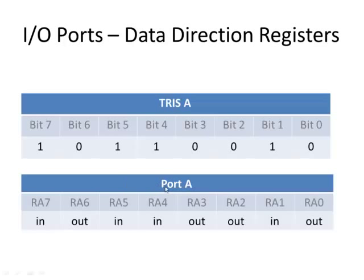Each bit in Port A has its own unique name. Since ports are bit addressable, we call bit 7 of Port A RA7 — the R stands for register. Going down: RA7, RA6, all the way down to RA0. Each one has its own unique name that is identified within the microcontroller.